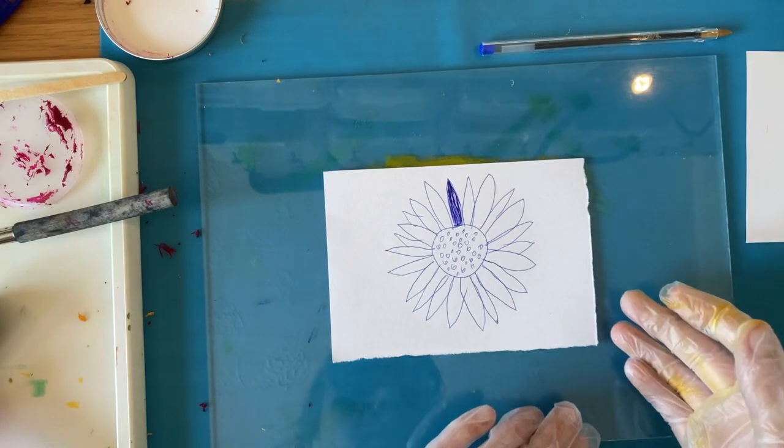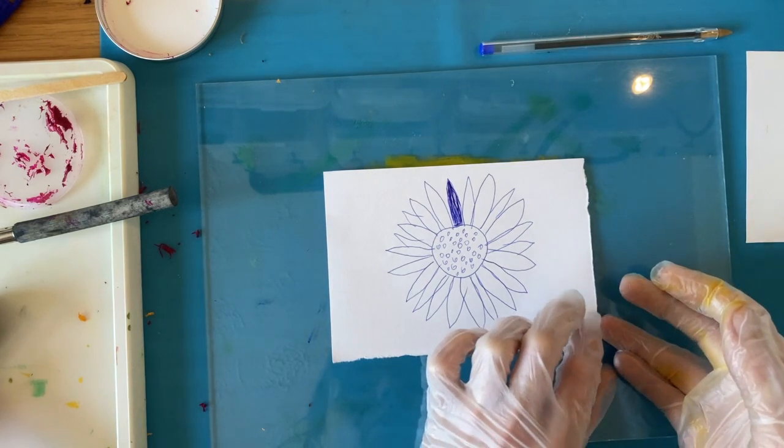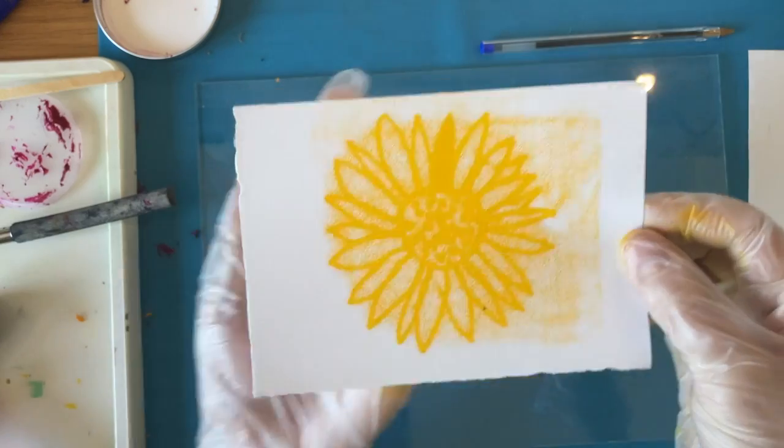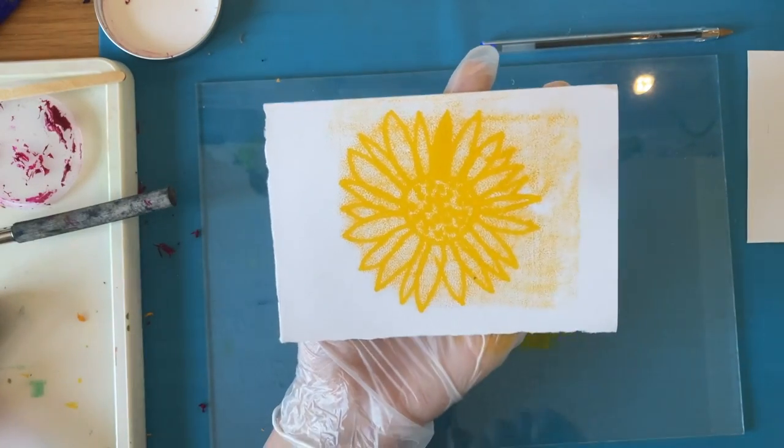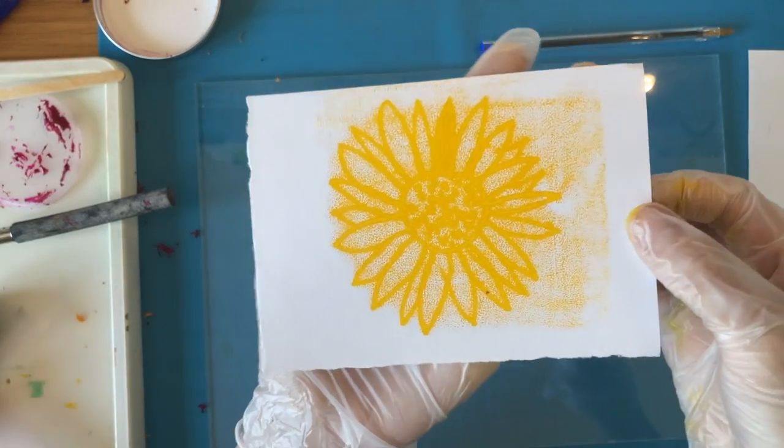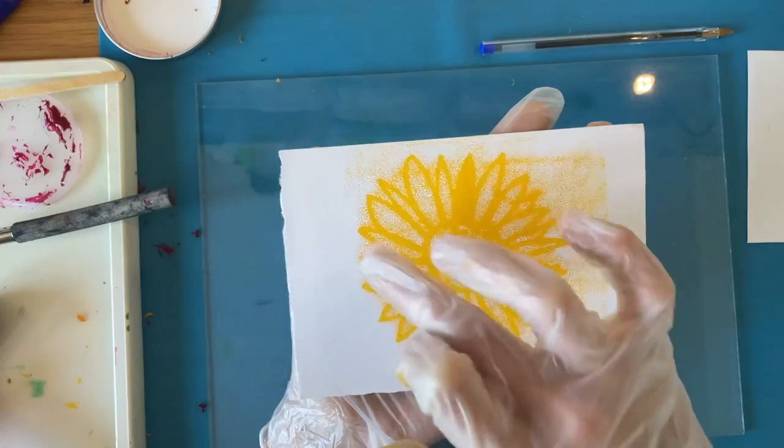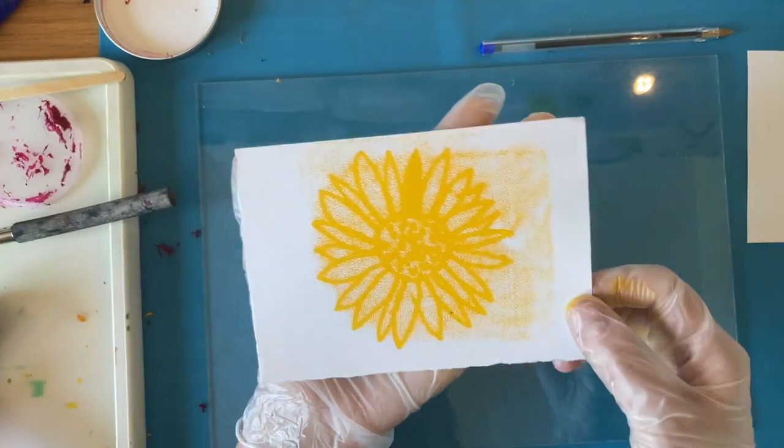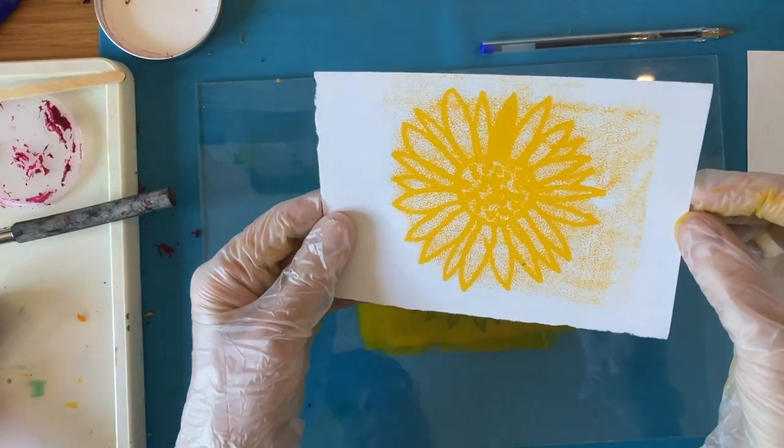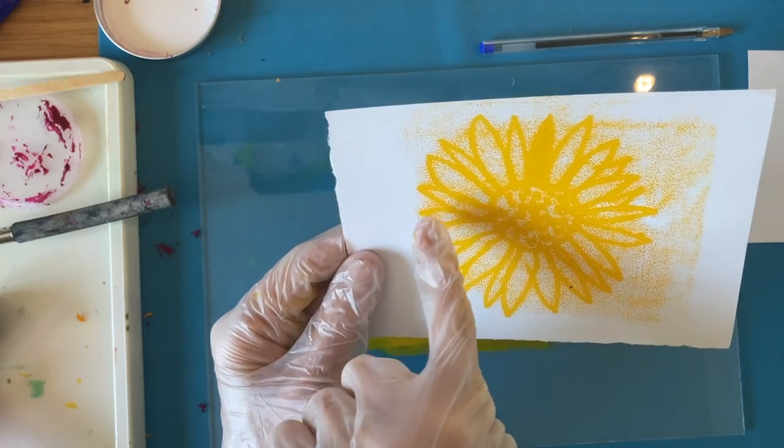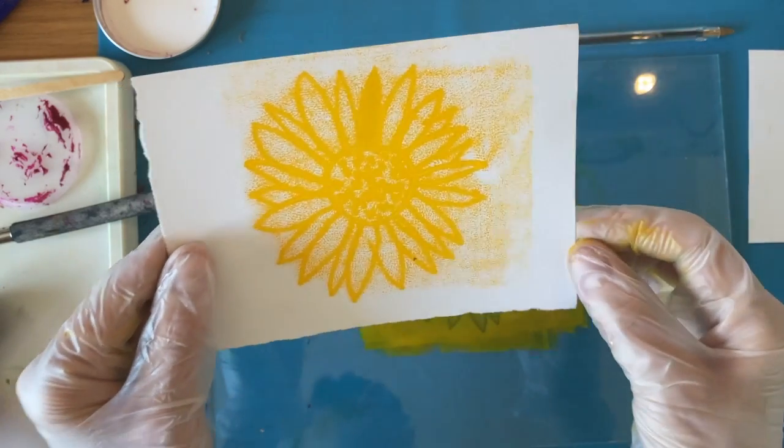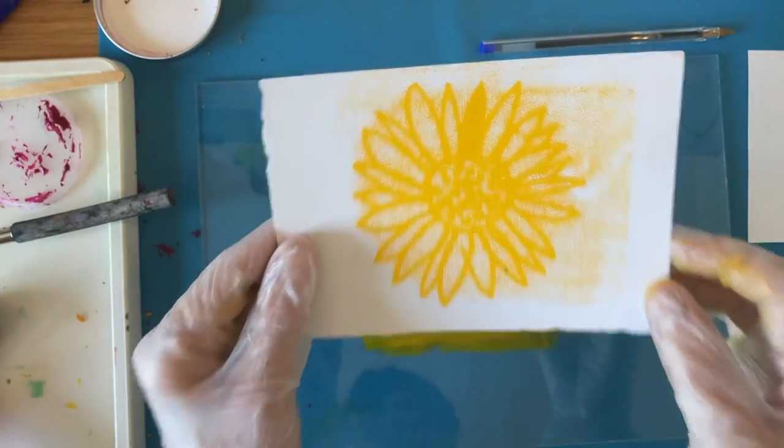When you're happy with your drawing, you lift it up very slowly, and you can see that you have an image of the flower that I drew on the back in the yellow. It has picked up a bit of the paint on the way around, maybe I could have done with slightly less paint, but it gives a really nice mottled effect. I quite like the fuzzy edge that you get with this process. So that's one way of doing it.